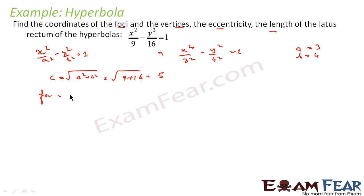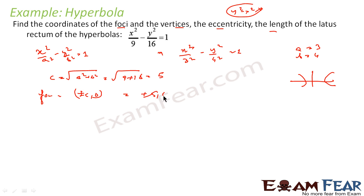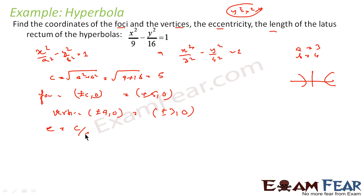So the foci in this case: since it is x squared minus y squared, not y squared minus x squared, the foci will be on the x-axis. So it will be (±c, 0), which becomes (±5, 0). Similarly, vertices is equal to (±a, 0), that becomes (±3, 0). Eccentricity is nothing but c by a, that is 5 by 3. And LR is nothing but 2b squared by a, so that is 32 by 3.